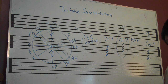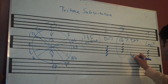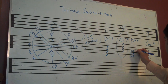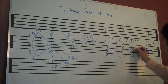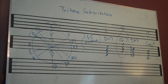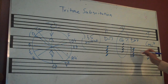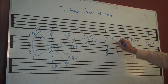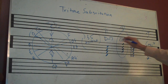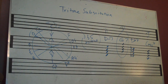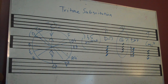So what are the notes for D flat dominant 7? We've got D flat, F, A flat, and C flat or B. So instead of this G7, we're going to play this D flat 7. Now we're going to listen to the chords as they move through the 2-5-1, but with D flat 7 instead of G7. You've got D minor 7 to D flat 7 to C major 7.